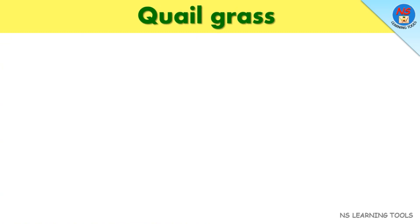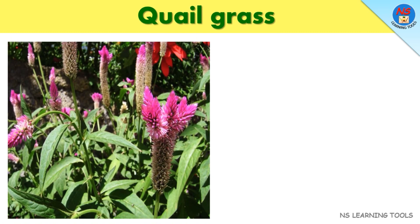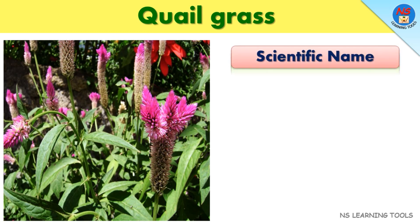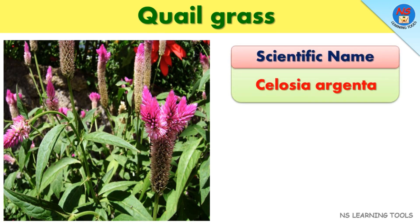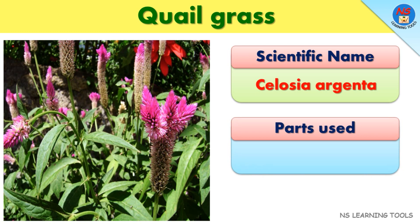Quail grass. Scientific name: Celocia argentina. Parts used: Entire plant.